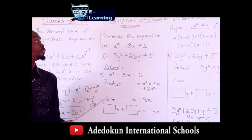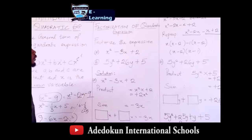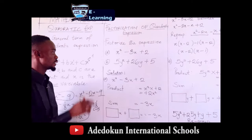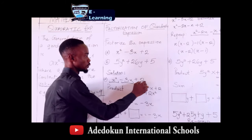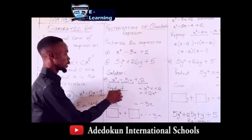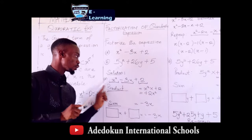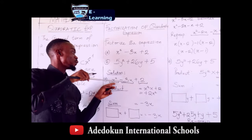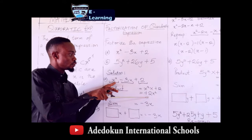Now let's look at how to factorize a quadratic expression. Example one: x² minus 3x plus 2. A quadratic expression always has three parts — the order two term, the order one term, and the order zero term. You need the idea of product and sum. The product is always the result of the order two term times the order zero term: x² times 2 gives you a product of 2x².